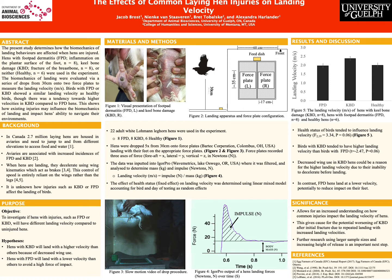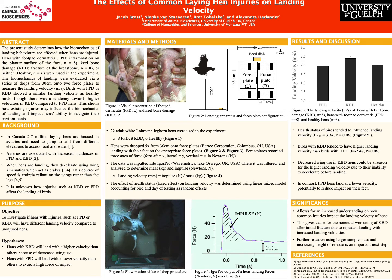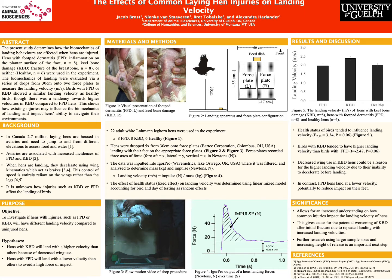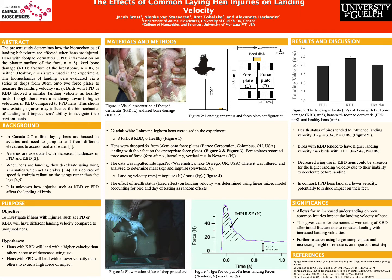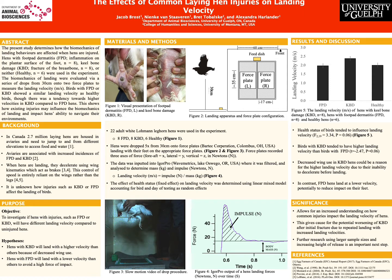Hens with keel bone damage likely had a higher landing velocity because of their reluctance to use their wings as a braking mechanism, due to the injury to the breastbone and surrounding muscle which is heavily involved in wing use. This begs the question of whether hens with existing keel bone damage are now more likely to have progressively worsening injury due to their consistently high landing velocities. The lower landing velocities of hens with foot pad dermatitis could be attributed to their reluctance to bear force on the landing site of infection.